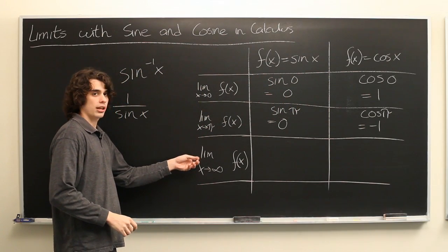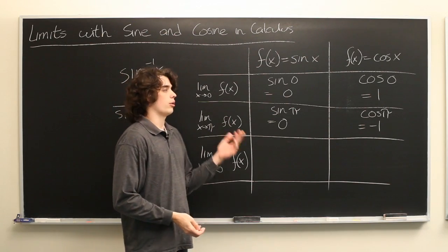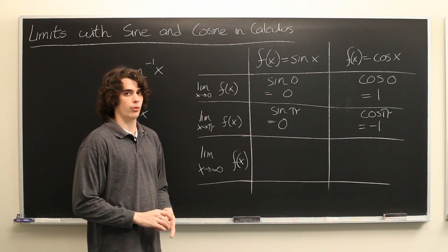All right, so now we're going to take a look at the limit as x approaches infinity. And you might think that since sine and cosine are as well-behaved as we've been making them out to be, that this should be just as easy as before.